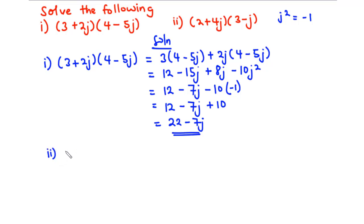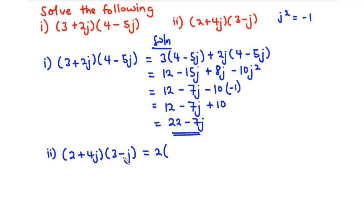For part (ii) we have (2 + 4j) multiplied by (3 - j). We pick 2 and distribute it across (3 - j), as well as picking 4j and distributing it across (3 - j).